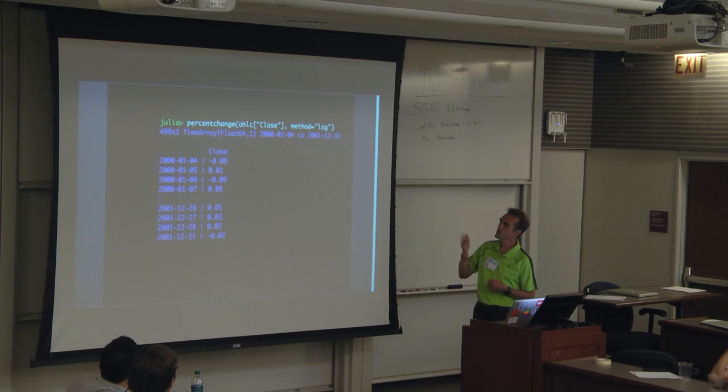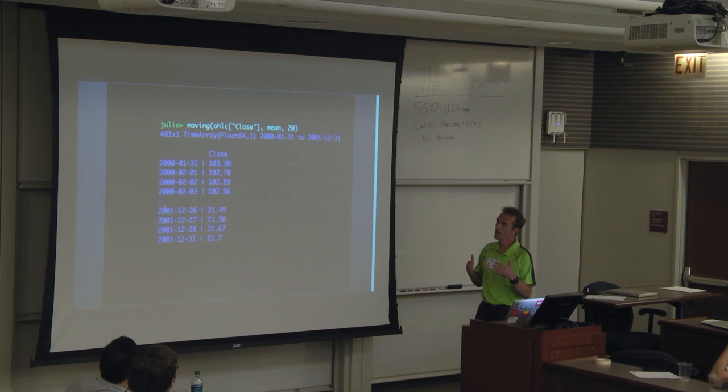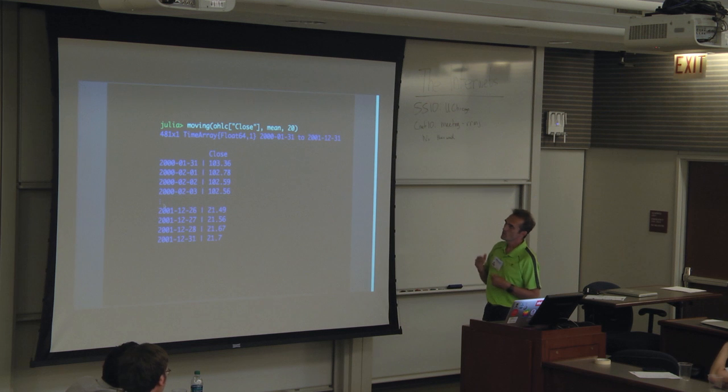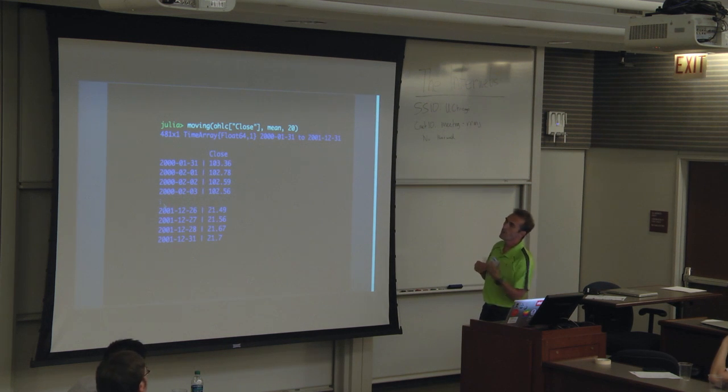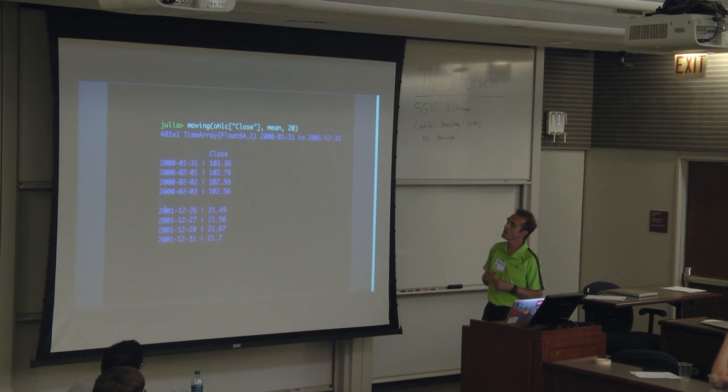Percent change is obviously just the change between the two periods. Moving creates a window. So the 20-day moving average here is basically what this is. And you can see that we've gotten a 481-row object from 500. So we've consumed 19 rows to get the first value, and those 19 rows have disappeared.